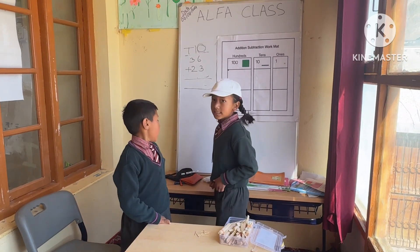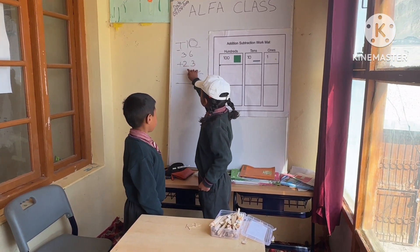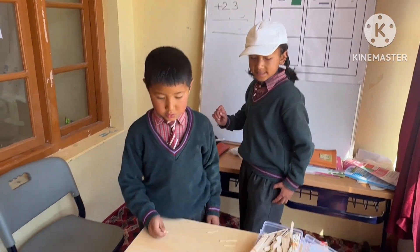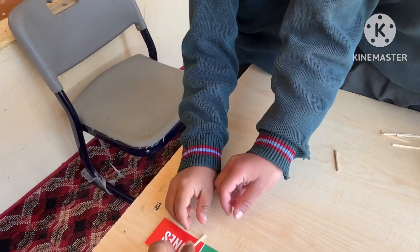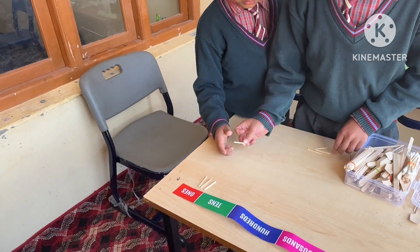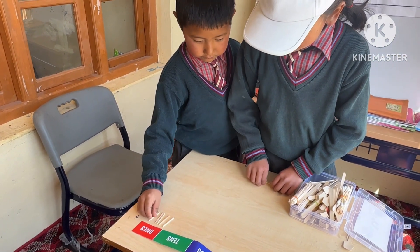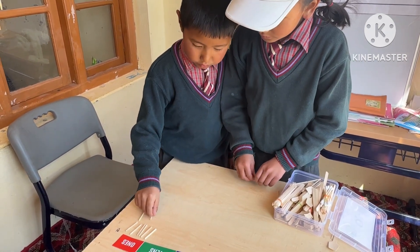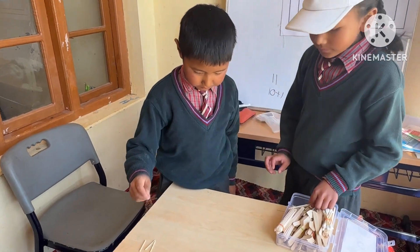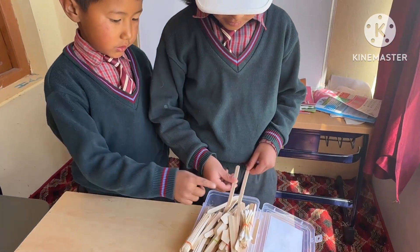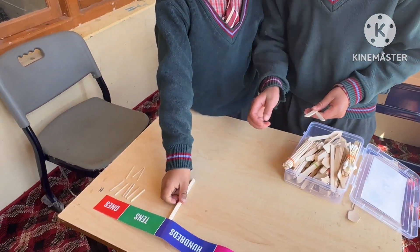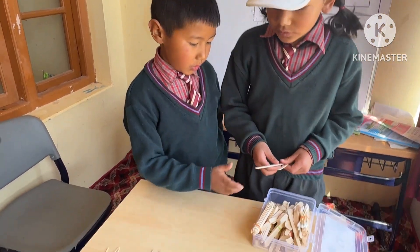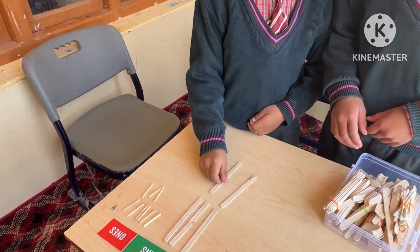What is your name? How many are you? 36 plus 23 — I don't know. How many are you? 1, 2, 3, 4, 5, 6. 3. 2. 3, 3. 10, 10. 1, 10, 2. 3, 2. 2. 1. 2, 2. Very good.